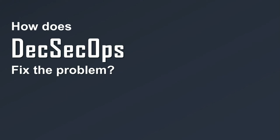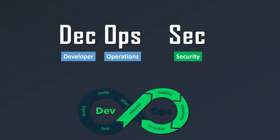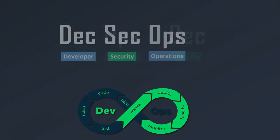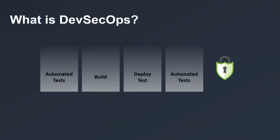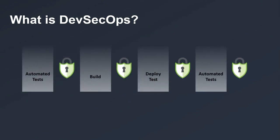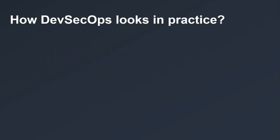So how do we fix the problem? The answer is by integrating security into DevOps — in other words, shifting security to the left. Instead of thinking about security after a new feature is developed and tested, right before releasing it and solving issues in chunks, start thinking about security right at the beginning and solve issues right away as soon as they appear.